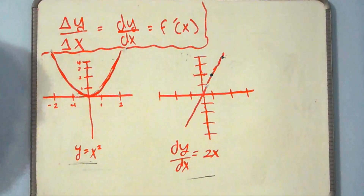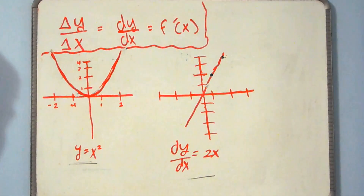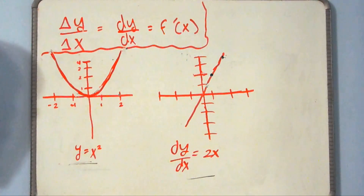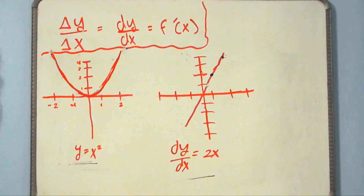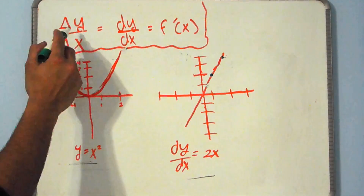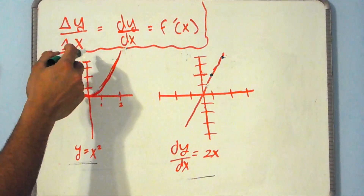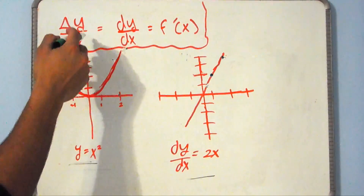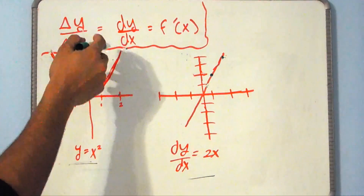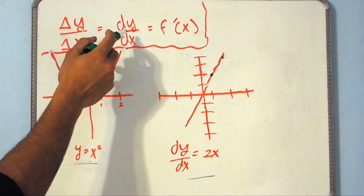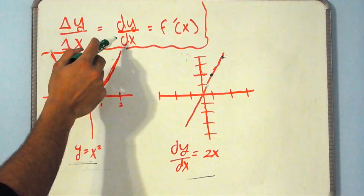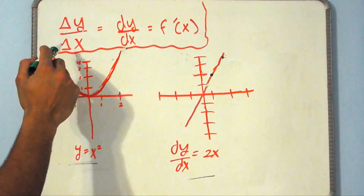In calculus, the derivative is often associated with the slope of a given function. In algebra, we learn that the slope is the change in y over the change in x, and the same way in calculus, this is equal to dy over dx, where dy is the change in y and dx is the change in x.